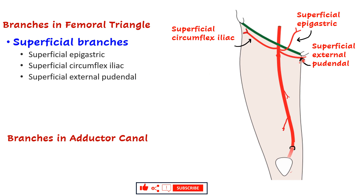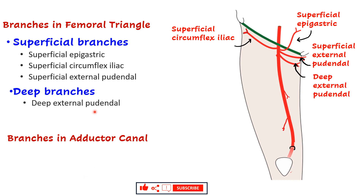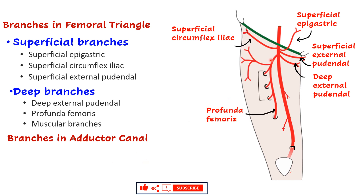We also have deep branches — three types. The first is the deep external pudendal, which also runs medially towards the external genitalia. Then we have the profunda femoris artery — the main artery of the thigh. Plus there are muscular branches given to the muscles of the anterior compartment of the thigh.